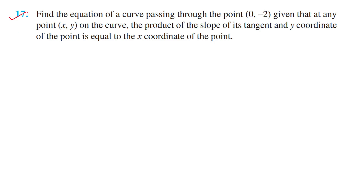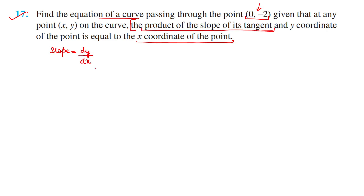Question 17 has a big statement but is an easy question. Find the equation of a curve passing through the point (0,−2), given that at any point (x,y) on the curve, the product of the slope of its tangent and the y-coordinate equals the x-coordinate. The slope of the tangent is dy/dx. So the product of dy/dx and y equals x, giving us dy/dx · y = x.